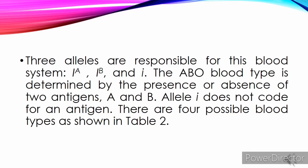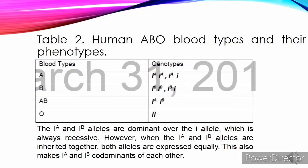Three alleles are responsible for the ABO blood system: Iᴬ, Iᴮ, and i. The ABO blood type is determined by the presence or absence of two antigens, A and B. Allele i does not code for an antigen. There are four possible blood types as shown in Table 2. The Iᴬ and Iᴮ alleles are dominant over the i allele, which is always recessive. However, when the Iᴬ and Iᴮ alleles are inherited together, both alleles are expressed equally, making Iᴬ and Iᴮ co-dominants of each other.